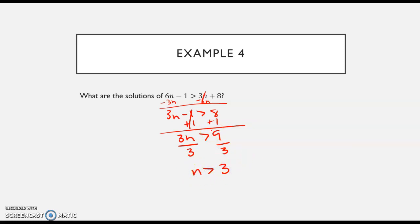And so then I can check my answer. But basically all of my solutions are any number that is bigger than three. And because it doesn't have the equal to this, if I had to graph it, it would be one with an open circle.